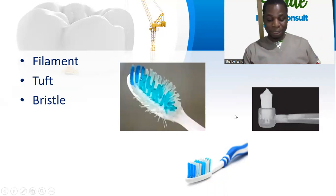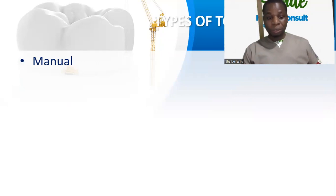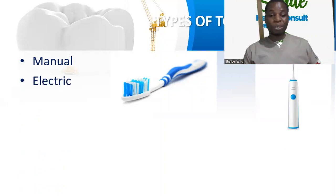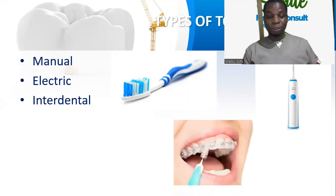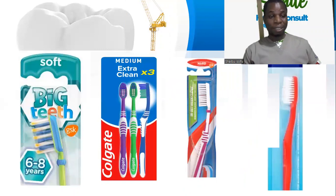We can classify the toothbrush based on their design: am I going to use it the manual way, or does it require the use of power? Those we use in our various homes are the manual ones. We also have electric toothbrushes that require a source of power — either a battery or you charge it. We also have interdental toothbrushes, which are basically used to clean in between the teeth. They are very small and slender by nature, and they can also be recommended during special procedures like braces, so you can use them to clean under the braces.